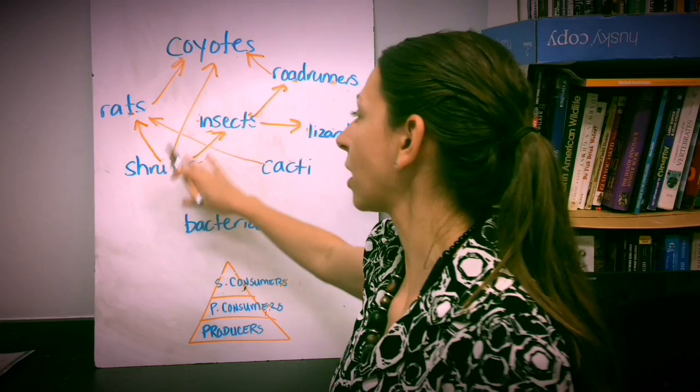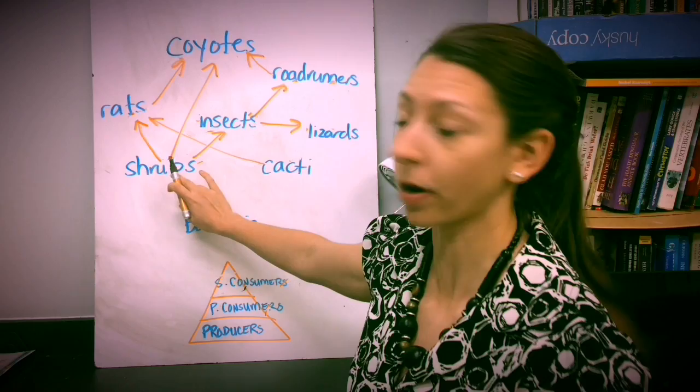So we notice that these coyotes are not only secondary consumers, but they're also primary consumers as well, because they're the first organisms eating the producer right here, but they're also the second organism eating this first consumer.